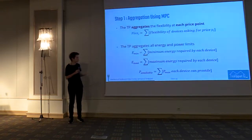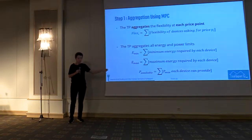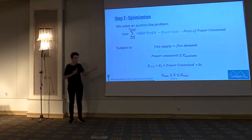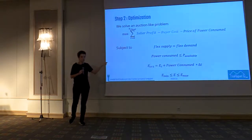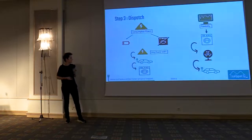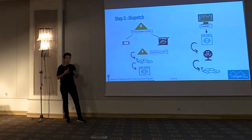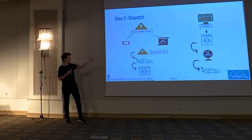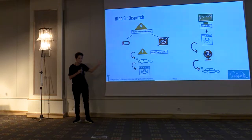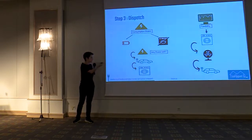Once the trading platform receives all these bids, it aggregates not only the flexibility but all constraints for all devices. It then performs an optimization that not only tries to optimize revenue for buyers and sellers, but also minimizes the price paid according to day-ahead prices, while satisfying all electricity constraints. For allocating flexibility, we first ensure that washing machines already running finish running, then attribute power to devices with deadlines closest, and continue attributing power according to how close each device's deadline is.